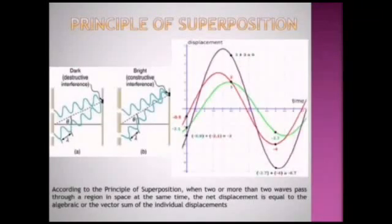Principle of superposition: According to this principle, when two or more waves pass through a region in space at the same time, the net displacement is equal to the algebraic or vector sum of the individual displacements. These two waves, red and green...